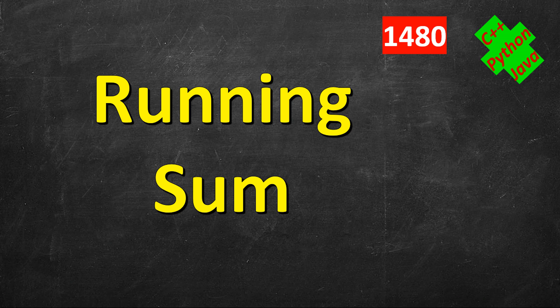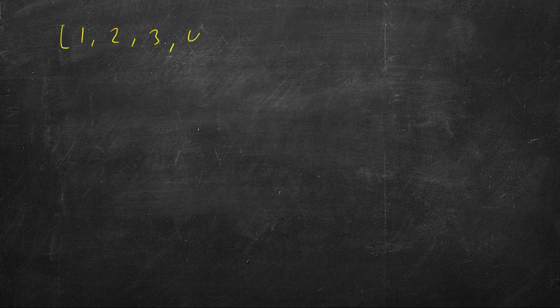Hello friends, in this video we are going to see how to find the running sum of an array. It's a one-dimensional array, so it should be very simple. Let's say we have an array: 1, 2, 3, 4, 5. Running sum means the sum up to the current index, and we run from left to right.